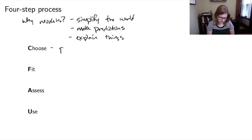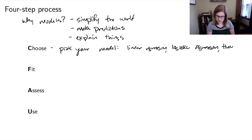So choose means you're going to pick your model. And in this class, that probably means you're going to pick a linear regression model. You might pick a logistic regression or time series. And then you also need to pick what variables you're going to use - pick your explanatory variables. And then once you've picked out the type of model you want to make and the variables you want to include, then you need to fit the model.